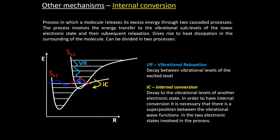For inter-system crossing, we simply note that the molecule can transit from singlet to triplet states via non-radiative processes by releasing energy as heat. We do not go into further detail here.